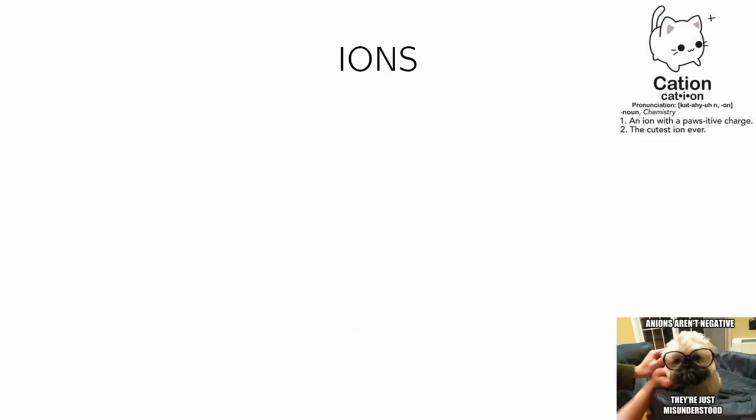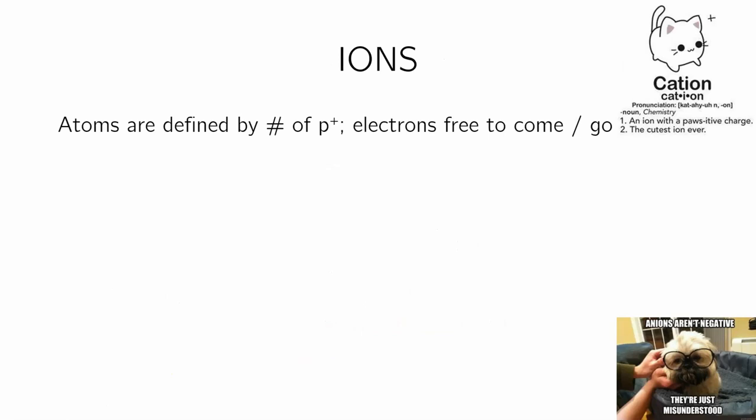Ions. Atoms are defined by the number of protons — if I have five protons, I know I have boron; four protons, I have beryllium. But the number of electrons can change for an atom — it doesn't matter. I can add electrons to boron or subtract electrons from it, and it will still be boron. It will be called boron ions. So electrons can come and go without changing the identity of the atom.